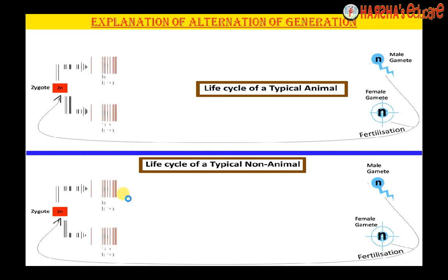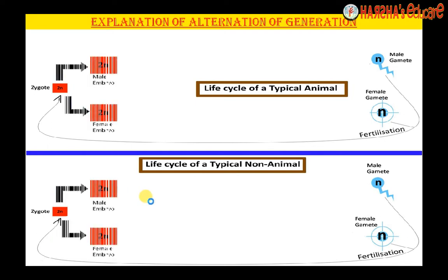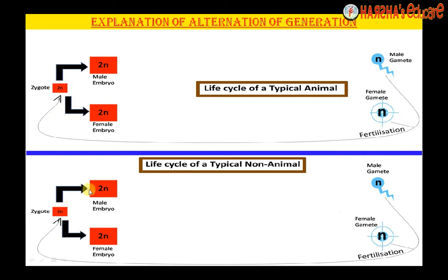Next, the zygote develops into an embryo usually. Sometimes, in the case of the non-animal, it is not called an embryo — it may be called a thallus — but we are using embryo here for convenience. The zygote is always unicellular and it develops into a multicellular organism, which we can call an embryo or thallus. In the upper case — the animal life cycle — the word thallus is totally invalid.